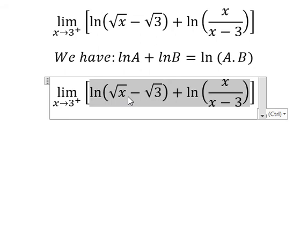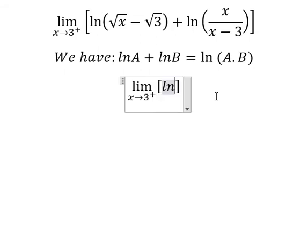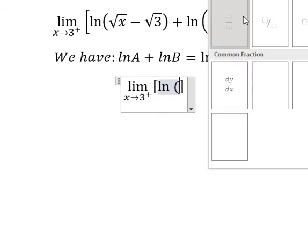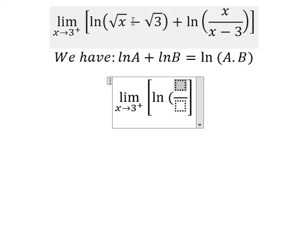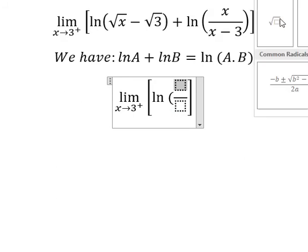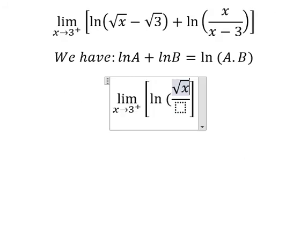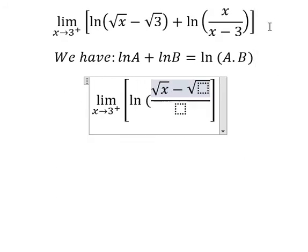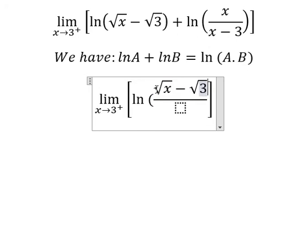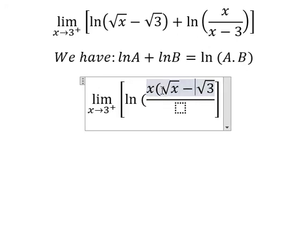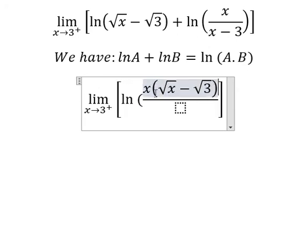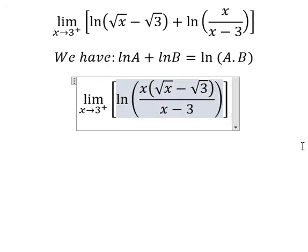We have ln A plus ln B and this one we can write into ln of the square root of x minus the square root of number 3 multiplied by x over x minus 3. We have this one in here.